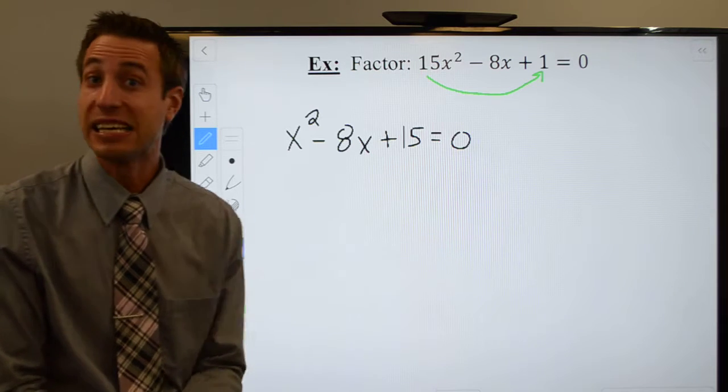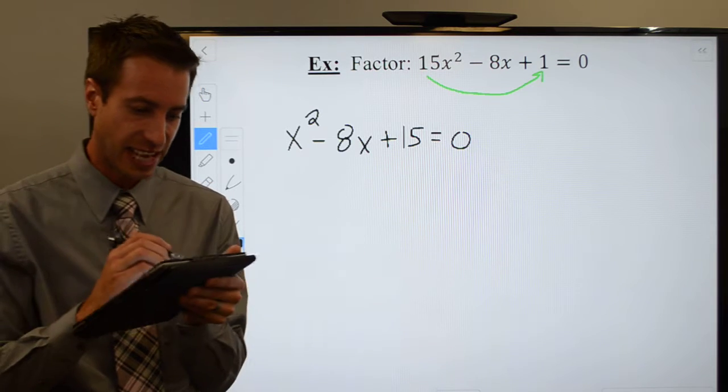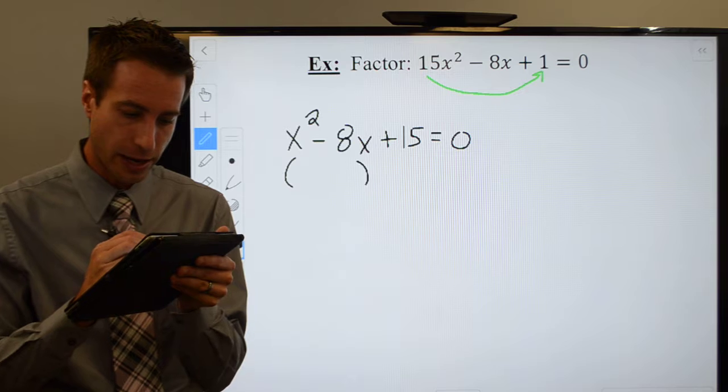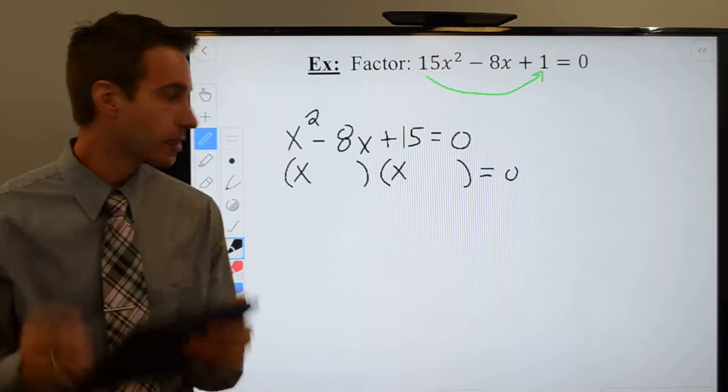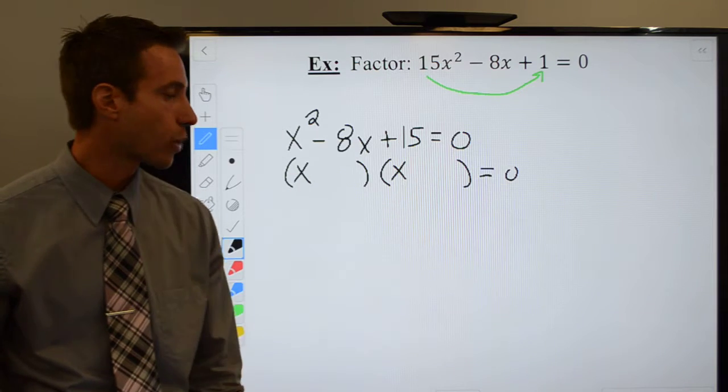But anyway, here's the way it works. My leading coefficient is now a 1. Fantastic. Write your two binomials and let's see what we get. Well, the x and the x, because x times x gets me x squared.